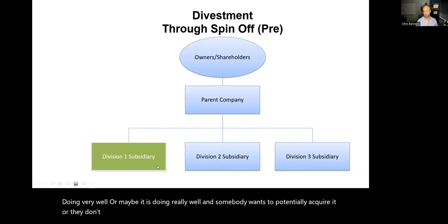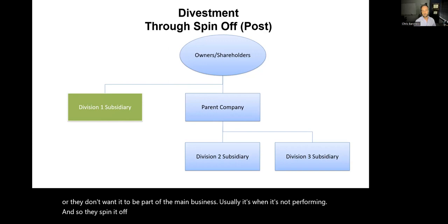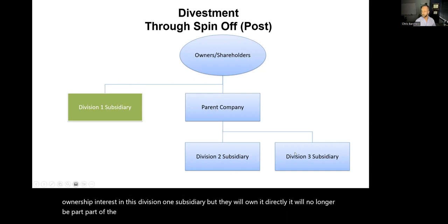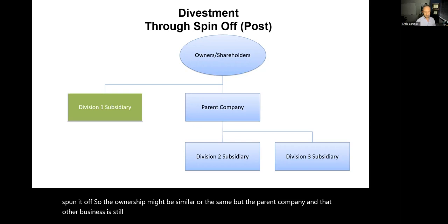Or they don't want it to be part of the main business — usually it's when it's not performing. And so they spin it off. The owners of the parent company still get an ownership interest in the division one subsidiary, but they will own it directly. It will no longer be part of the parent company with division two and division three. So they've spun it off — the ownership might be similar or the same, but the parent company and that other business are completely separate.